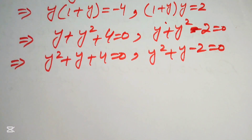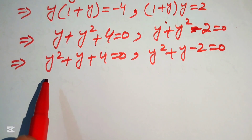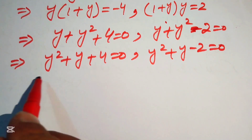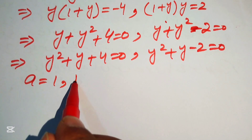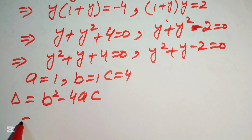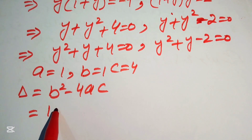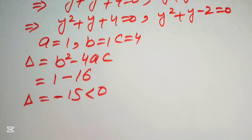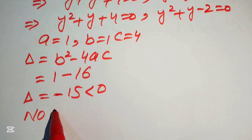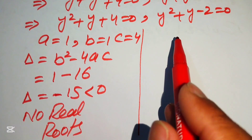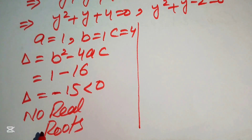Since we want real values of a, we check the discriminant of y² + y + 4 = 0. The coefficients are a=1, b=1, c=4, so Δ = b² − 4ac = 1 − 16 = −15. Since Δ < 0, this equation has no real roots, so we reject this case.